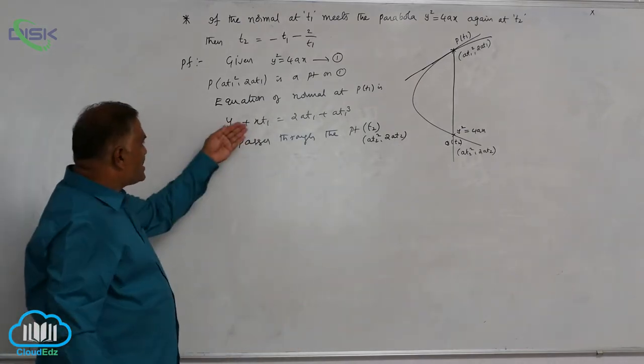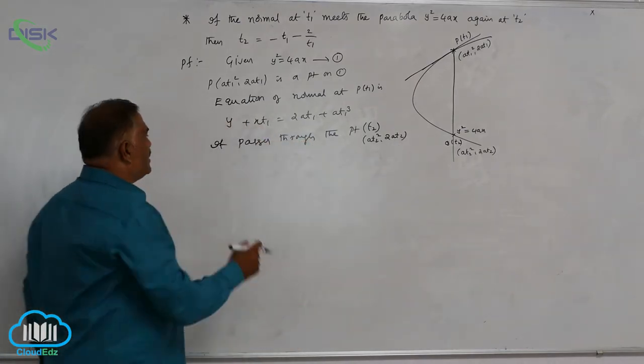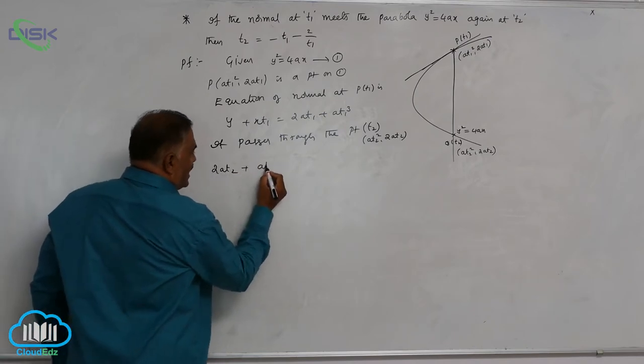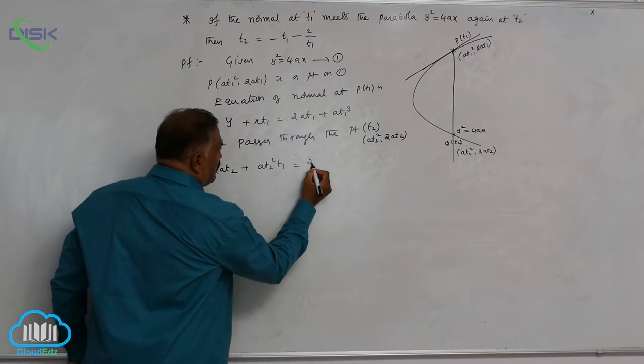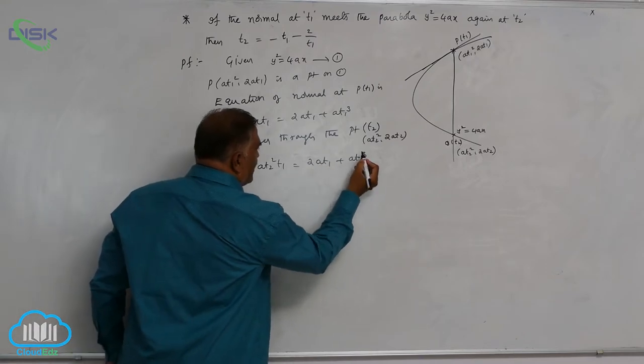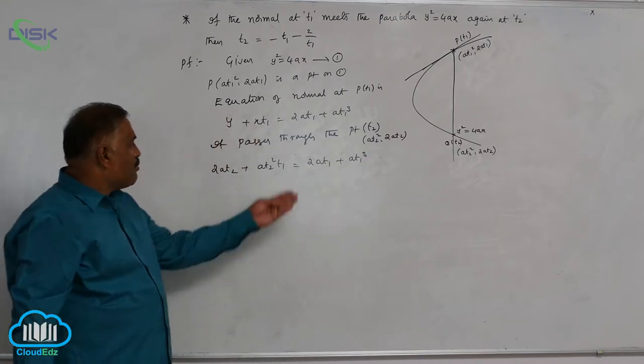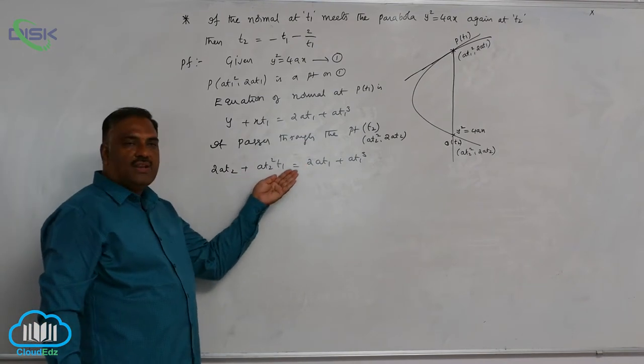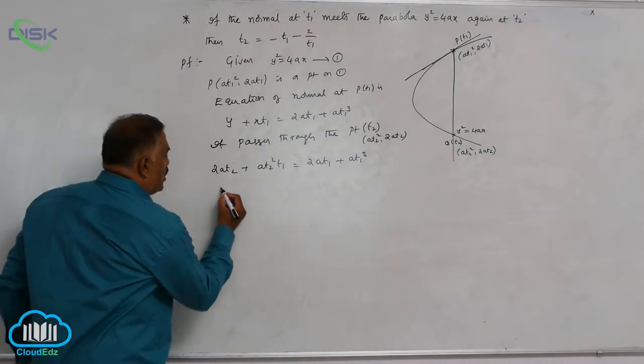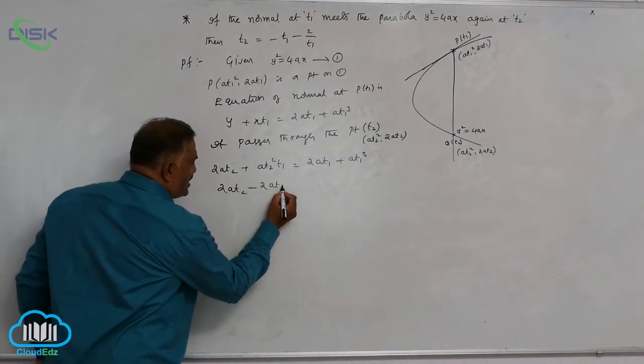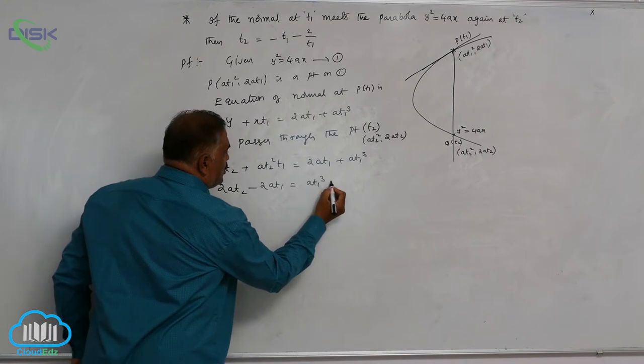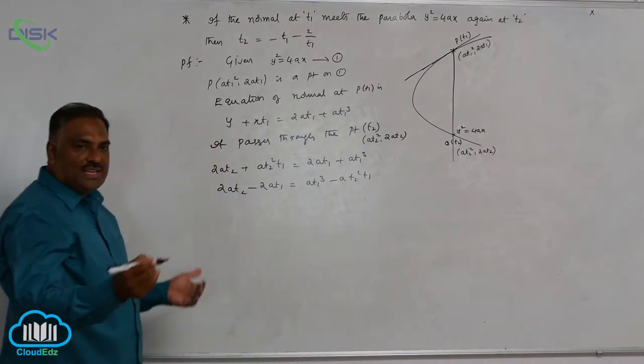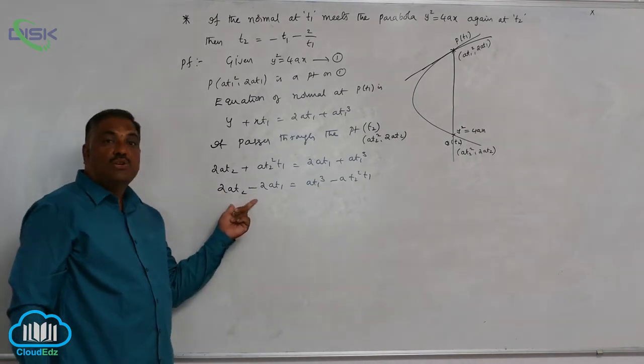Now, wherever x and y are, substitute. This gives 2AT2 + AT2²T1 = 2AT1 + AT1³. Now, bring 2AT1 to this side, AT2²T1 to that side. So, 2AT2 - 2AT1 = AT1³ - AT2²T1.